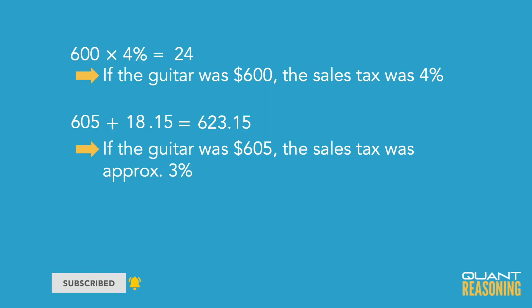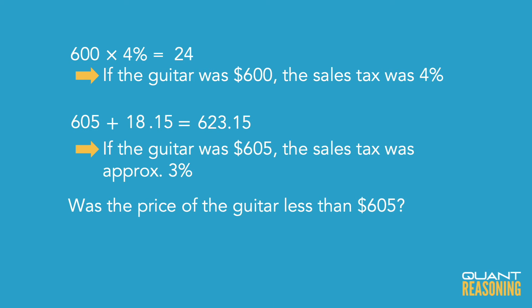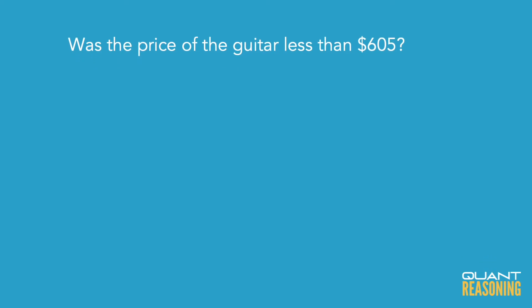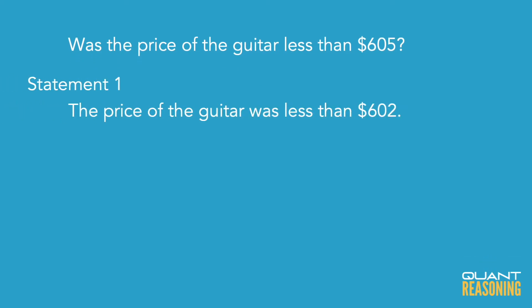So the cutoff is where the guitar is just slightly over $605. I'm going to rephrase the question to: 'Was the price of the guitar less than $605?' Now I'm ready to go to the statements — and I hope you'll agree we can get this far in about a minute and 50 or less. Statement 1 says the guitar was less than $602. I wanted to know whether it's less than $605.